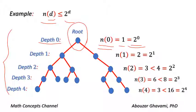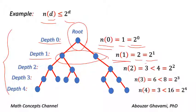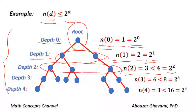At depth one, the maximum number of available nodes is two. Therefore N of one equals two, and two equals two to the power of one, giving us the equation N of one equals two to the power of one. At depth two, we have three nodes, so N of two equals three. Since three is less than four and four equals two to the power of two, we have N of two is less than two to the power of two.